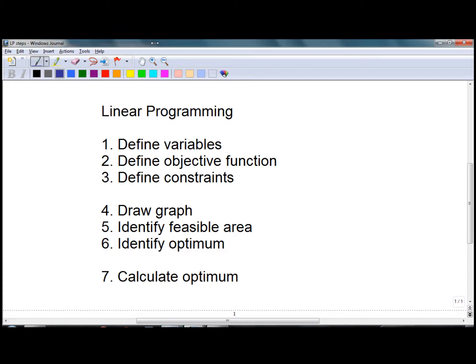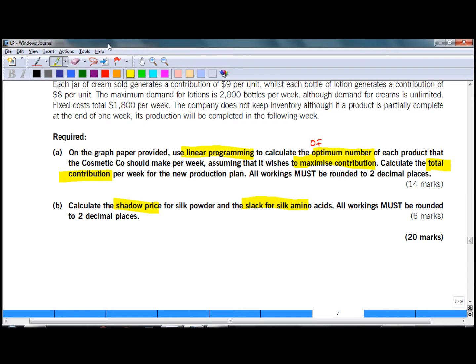When solving a linear programming problem, you have to follow seven steps. As you read details of the question, focus on the first three steps: definition of variables, objective function, and constraints. As stated in requirement part A, the objective function is maximize contribution. So the total contribution is going to be our objective function.